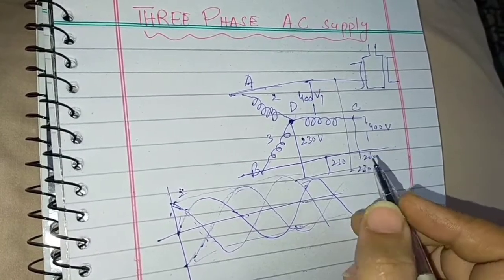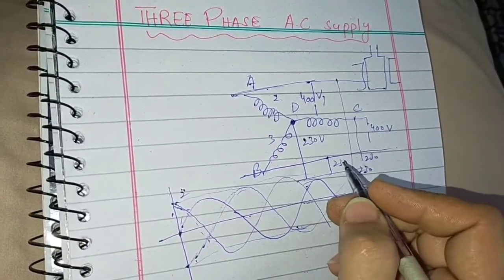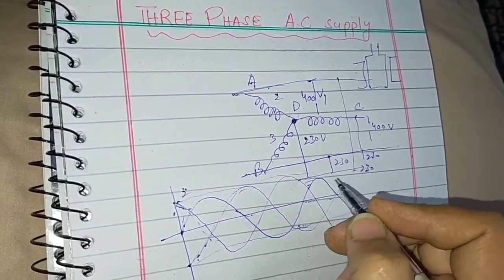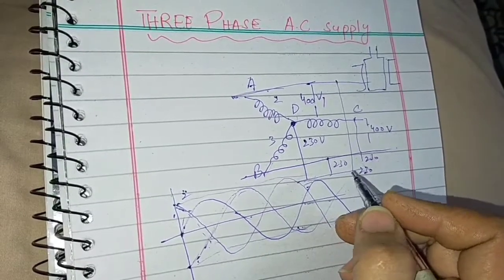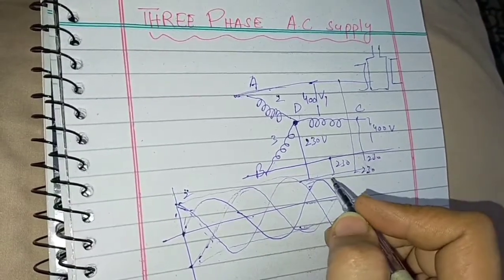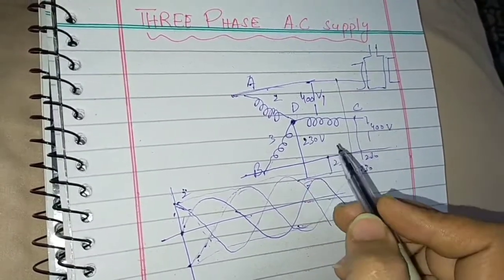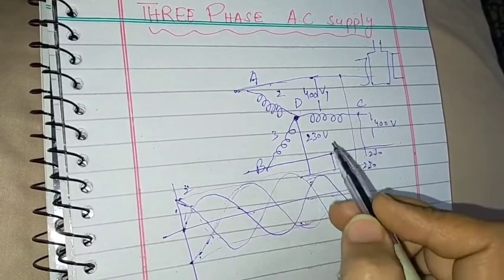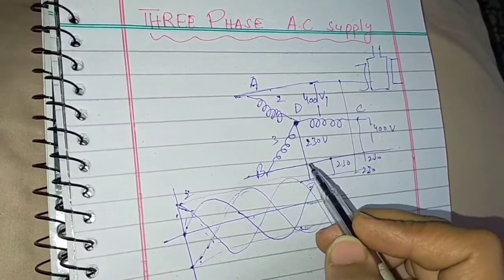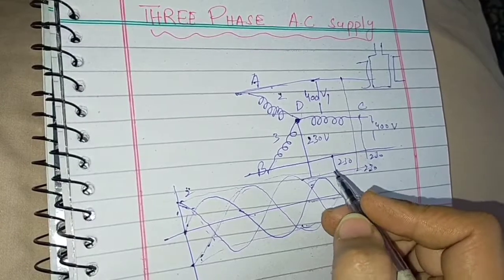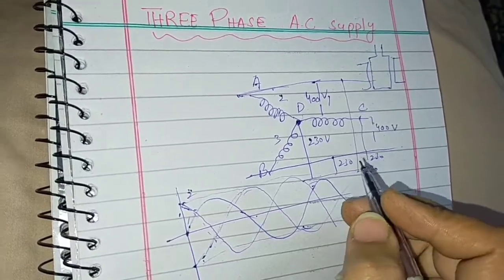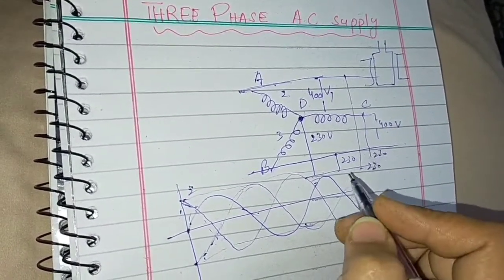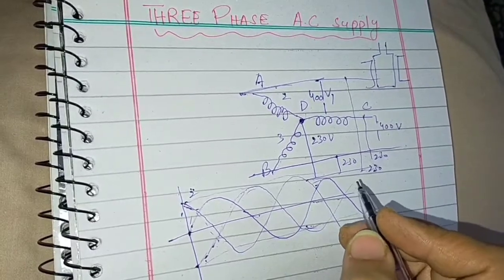The most important advantage of the three-phase AC supply is that if you are going to use appliances that have higher voltage ratings, you can use three-phase AC supply. In this case, the load is divided among the three coils, and overloading is not created, because now you have the connection to 400 volts.